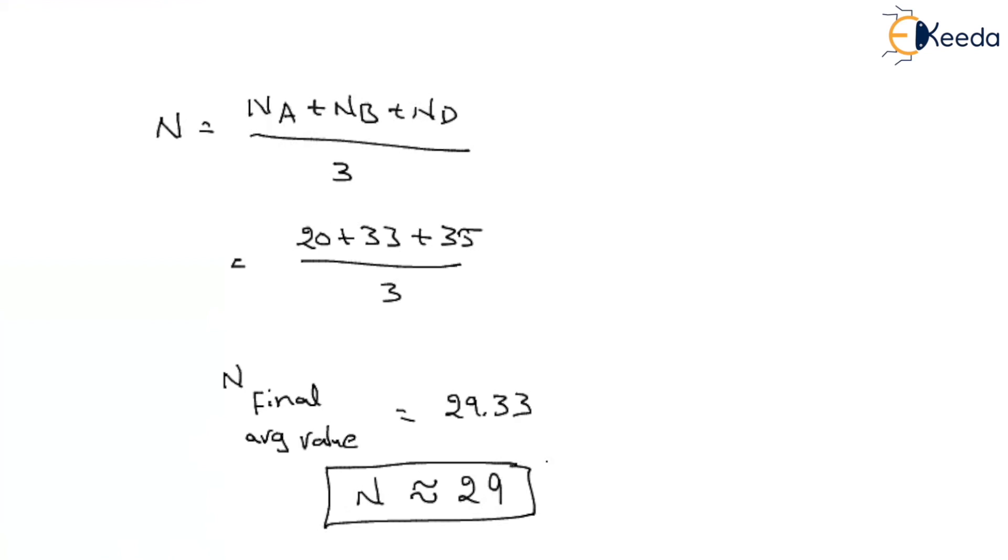So, first we have to find out the average value and then we have to see whether independent values are falling within these limits or not. If they are not falling within the limit, then you should not consider them in the final calculation. Okay, thank you.